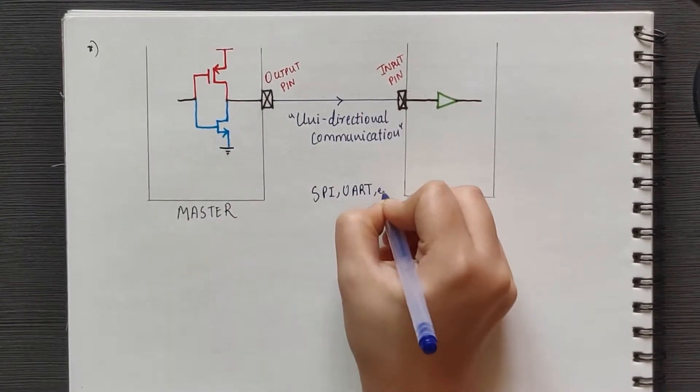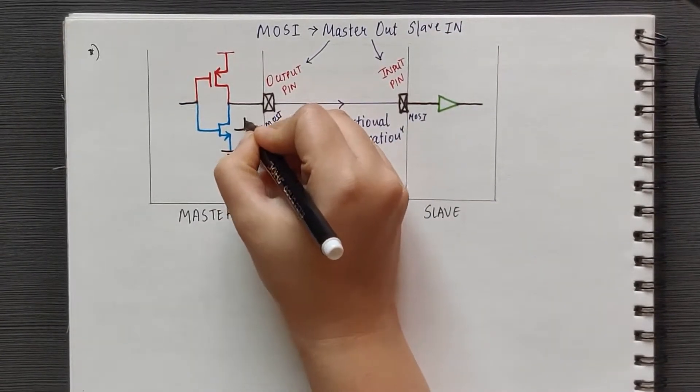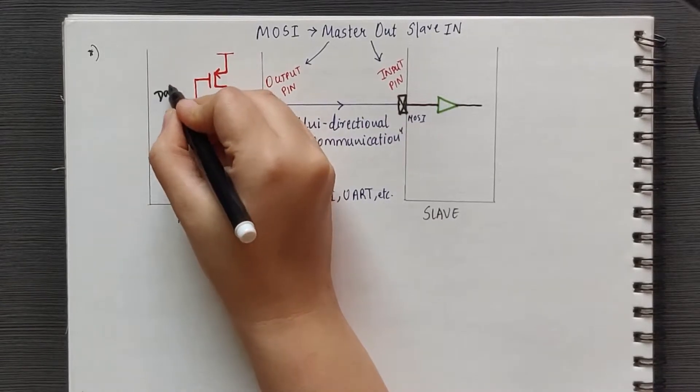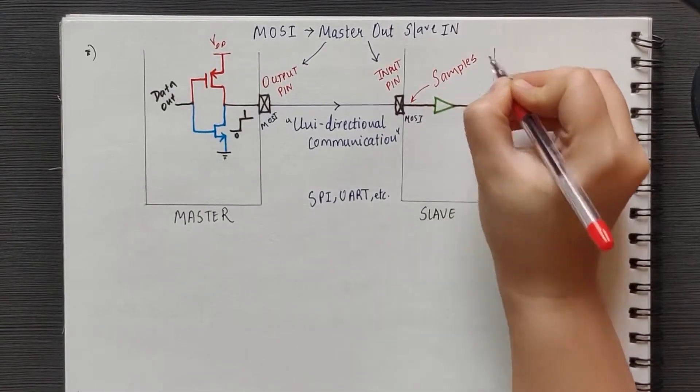In case of SPI, MOSI is nothing but master out, slave in pin. Here, the master generates 0 and 1 using the push-pull circuit and the slave simply samples the current state of the MOSI bus.